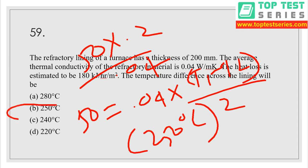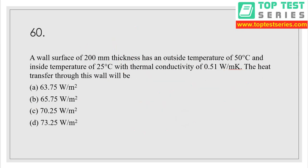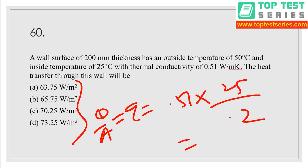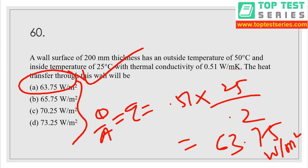Question number 60: a wall surface 200 mm thick has outside temperature 50°C and inside temperature 25°C, with thermal conductivity 0.51 watt per meter Kelvin. Heat flux Q/A = K × ΔT / dx = 0.51 × 25 / 0.2 = 63.75 watt per meter square — option is the correct answer for this question.